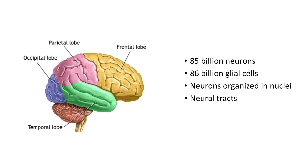Our brain is incredibly complex. The human brain has about 85 billion neurons and they all engage in information processing. We have another 86 billion glial cells, which are kind of like helper cells that help support neural functioning. Each one of those information processing cells makes about 15,000 connections with other cells.